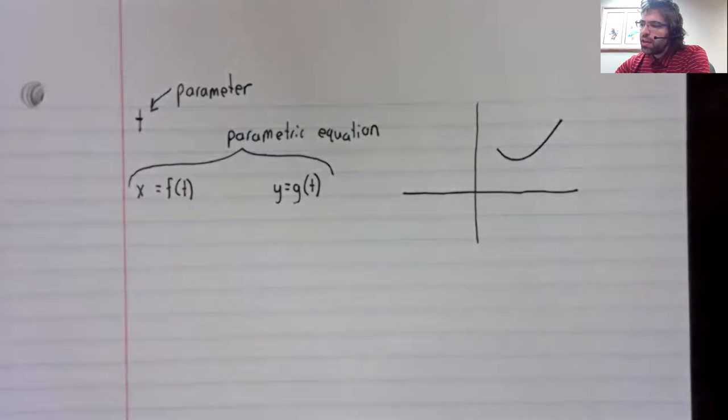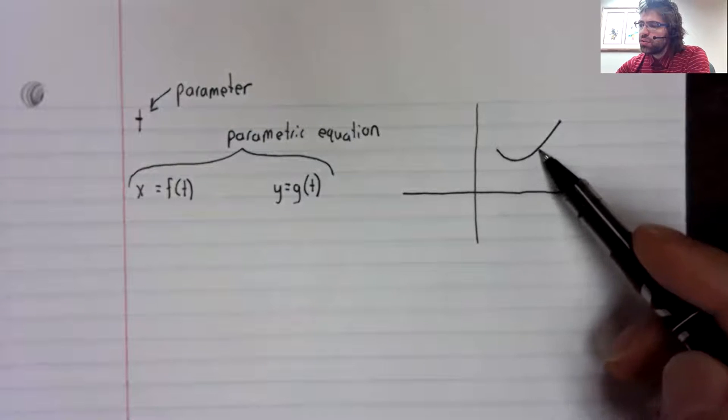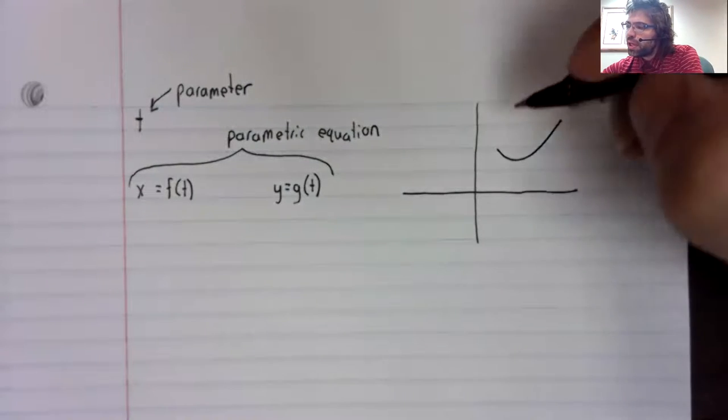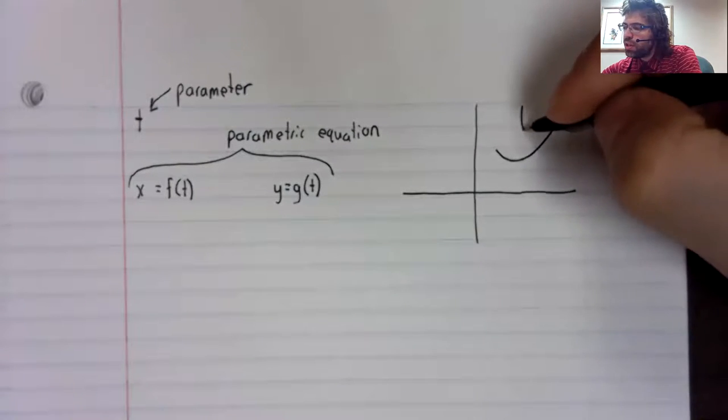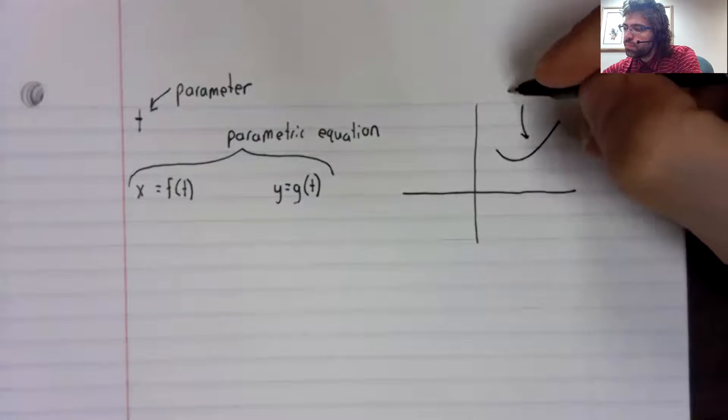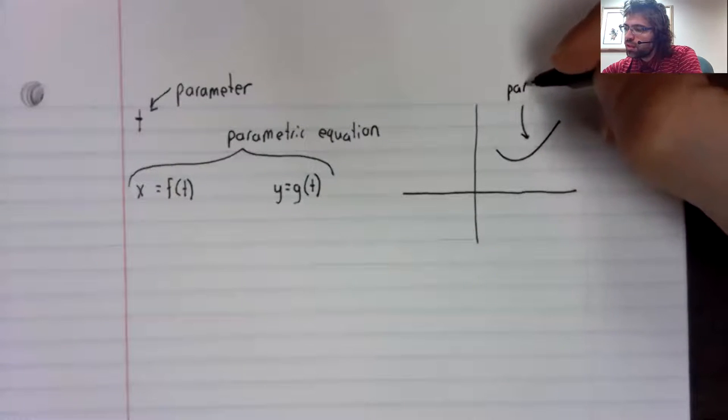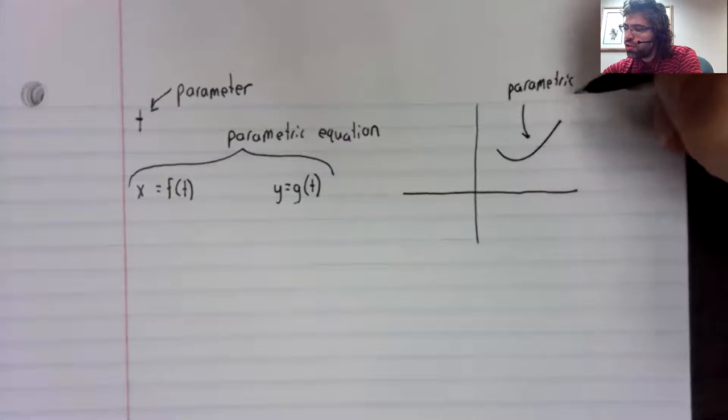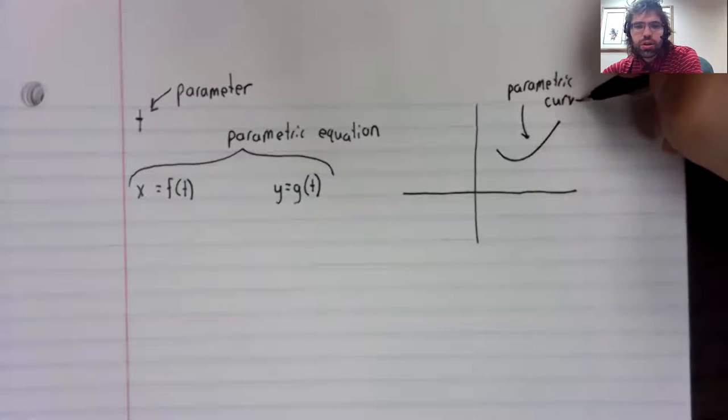And the curve we get from a parametric equation is called a parametric curve.